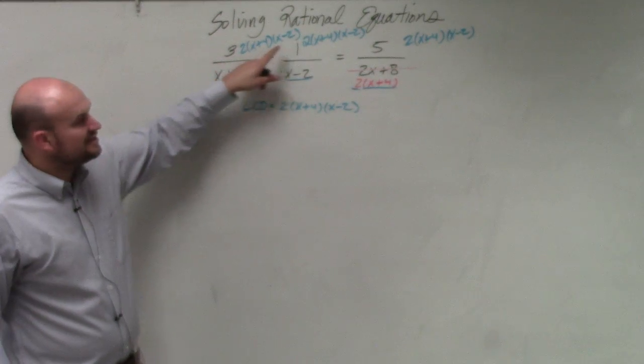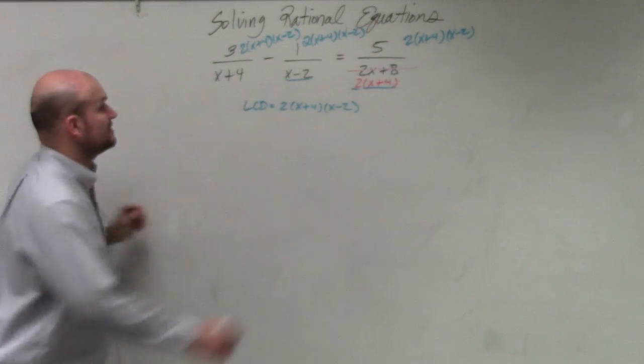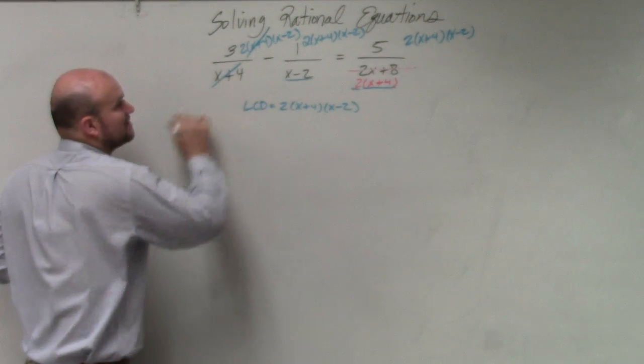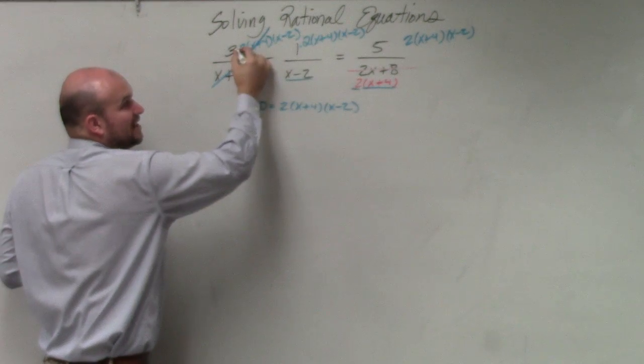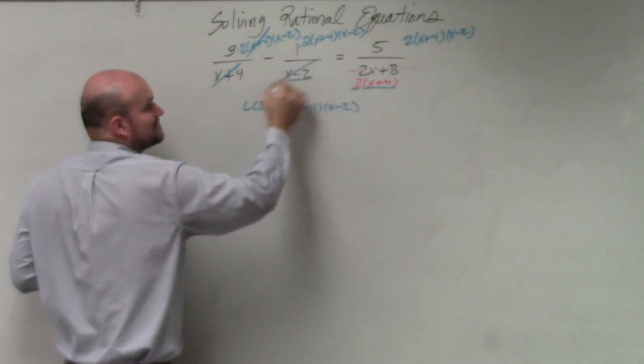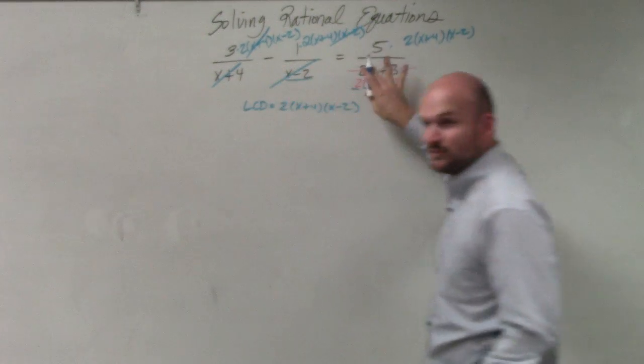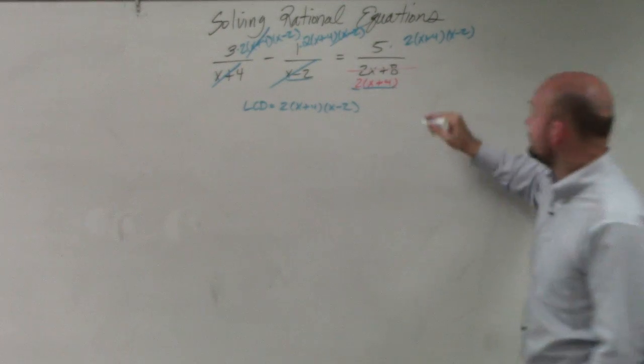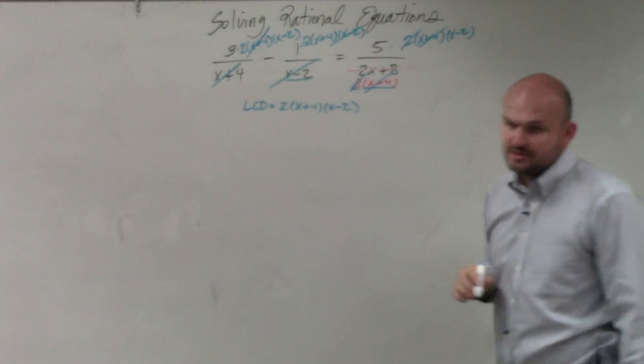Now watch. Do you guys see these are all separated by multiplication? So guess what? The x plus 4's divide out. These are all separated by multiplication, right? So x minus 2's divide out. These are all separated by multiplication, right? So guess what? The 2's and the x plus 4's divide out.